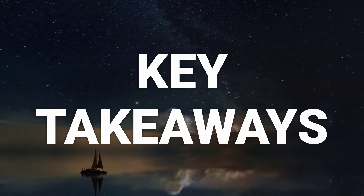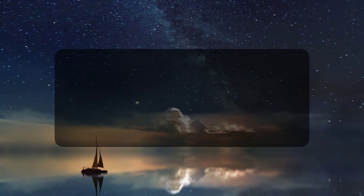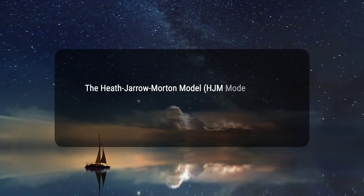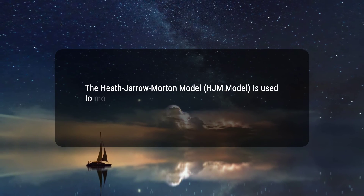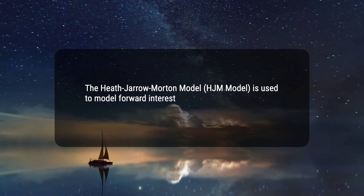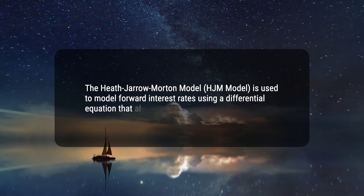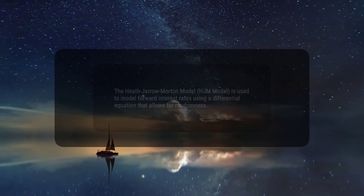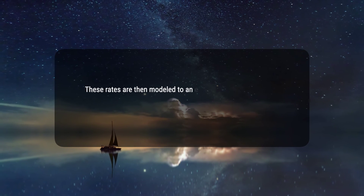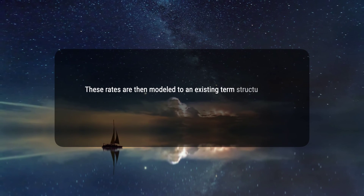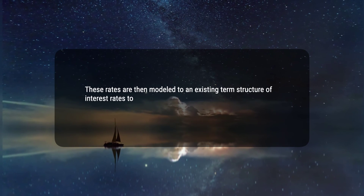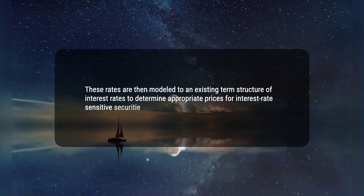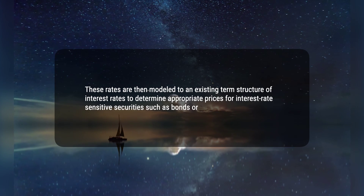Here are two key takeaways. 1. The Heath-Jarrow-Morton model (HJM model) is used to model forward interest rates using a differential equation that allows for randomness. 2. These rates are then modeled to an existing term structure of interest rates to determine appropriate prices for interest rate-sensitive securities such as bonds or swaps.